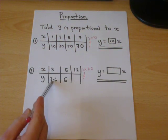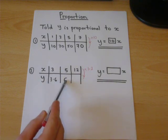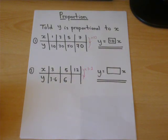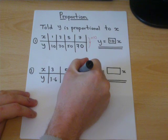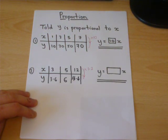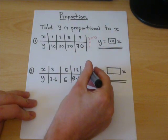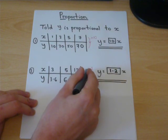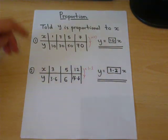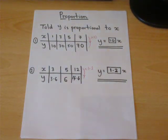Once again, 3.6 divided by 3 is 1.2. 6 divided by 5 is 1.2. That is therefore the pattern. So if x is 12, 12 times 1.2 is 14.4. We can therefore find the missing value. And it means that y is always 1.2 lots of x. So y is proportional to x means that there is a common number which you either multiply or divide by to get from x to y.